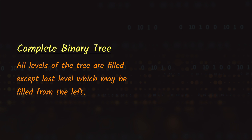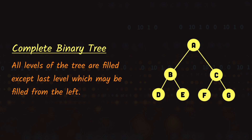Here we have a binary tree with three levels, and you can see that all the levels are fully filled with nodes, so we can say that this is a complete binary tree. Now let's say that we remove node G. In this case, level 1 and 2 are fully filled, and all the nodes on level 3 are on the far left side, so it is still a valid complete binary tree.